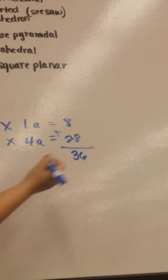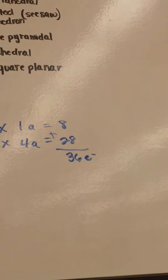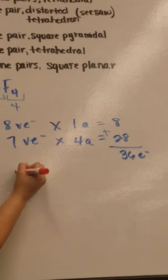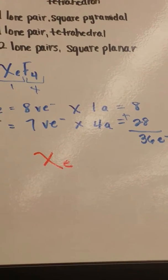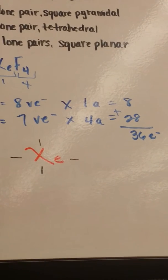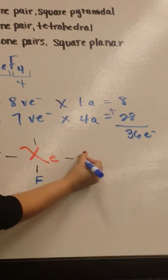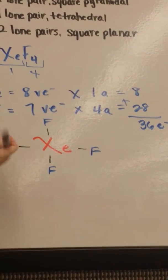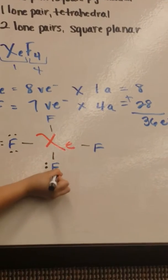Now that you have 36, this is the amount of electrons you will have around your structure. So let's start drawing this structure. We have xenon as our central atom, and we're going to bond 4 fluorines to it. We have to follow the octet rule, so let's put the lone pairs on the fluorines.